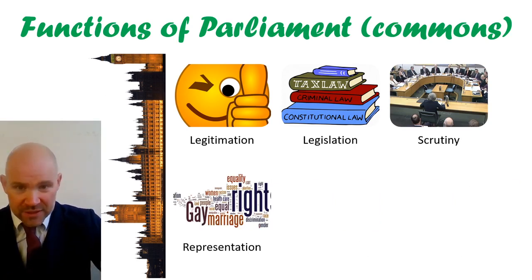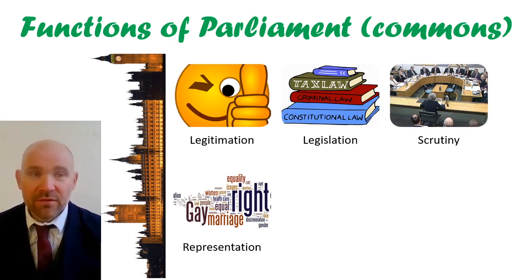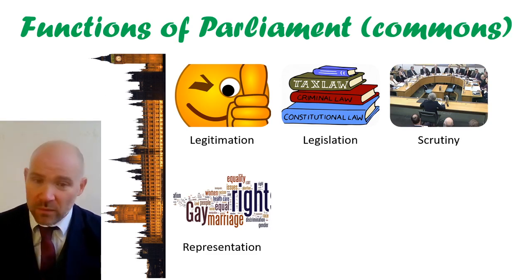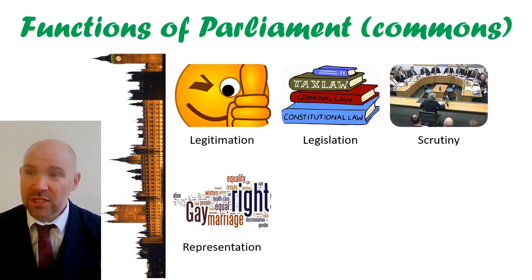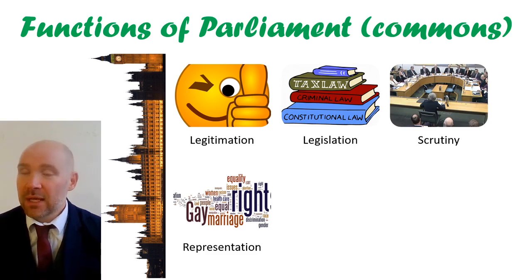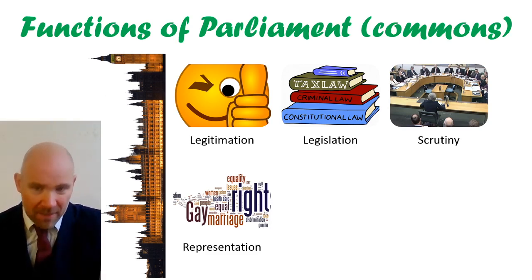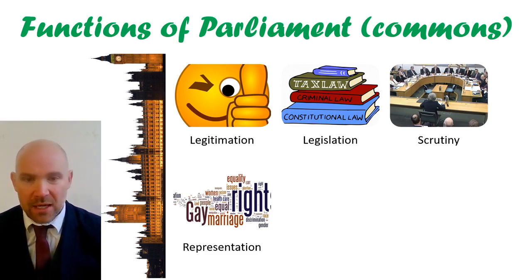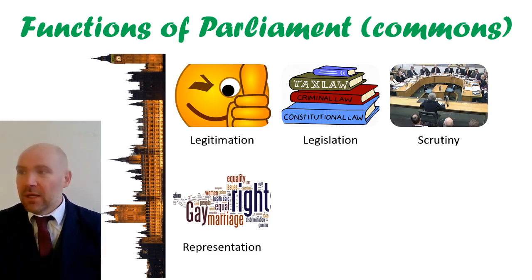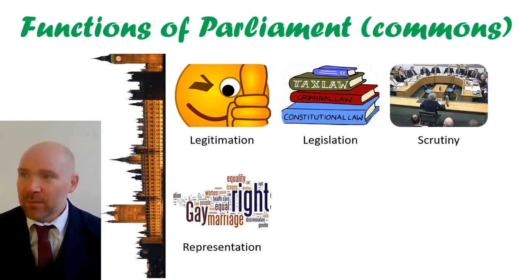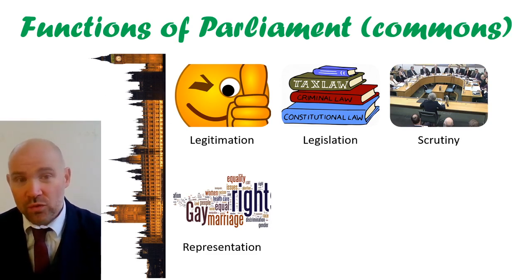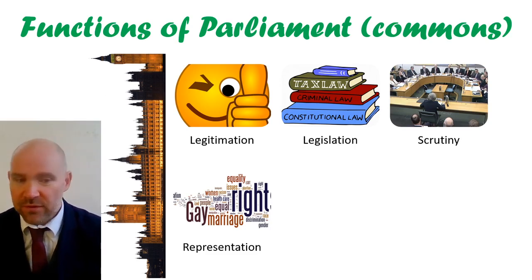They also provide representation — this links to legitimation — representation for different political views, left-wing and right-wing, for different races, genders, sexualities, and for different locations and regions in the United Kingdom, because each MP comes from a different place. The idea is that everyone should feel they have representation, people to talk on their behalf and campaign on their behalf in Parliament. One of the questions we'll be asking later is how well Parliament represents different views, different people, different demographics.